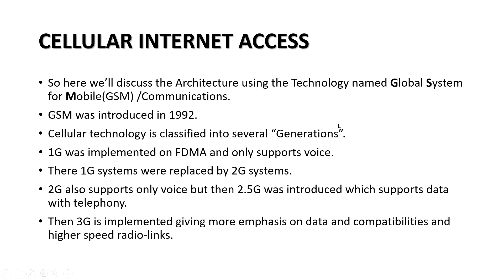Our first topic is cellular internet access, which is based on a technology named GSM — Global System for Mobile Communications. It was introduced in the early 90s and is classified into several generations: 1G, 2G, 3G, and 4G. 1G was implemented on FDMA (Frequency Division Multiple Access) and is now extinct. The evolved part, 2G, supports digital voice, and 2.5G also supports packet data alongside telephony. Then 3G came, which introduced full packet support and is implemented in parallel with the 2G GSM system.